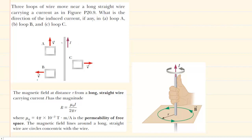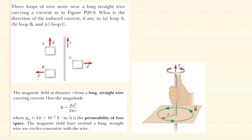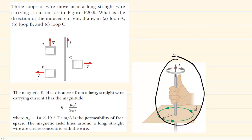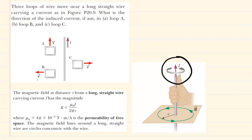To determine the direction, if any, of the induced current in these loops, we must first understand that this current-carrying wire is producing a magnetic field, and the direction of that magnetic field is also important. To determine the direction, we grasp the wire with the right hand, as indicated in this figure, and make sure that our thumb is pointing in the direction of the current. Our four fingers naturally curl in a counter-clockwise direction, so the magnetic field is also going in a counter-clockwise direction.